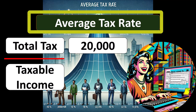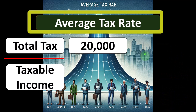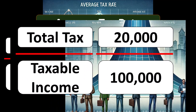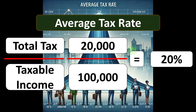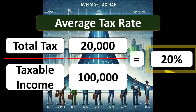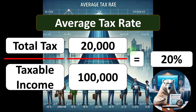The average tax rate is pretty easy: we take the total tax and divide it by the taxable income. So if the total tax paid was $20,000 and the taxable income was $100,000, then the average tax rate is 20%. By definition, the average tax rate is going to be in between all of the tax bracket rates actually used to calculate the tax, because it's somewhere in the middle. The highest tax rate would be higher than that amount.